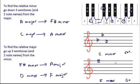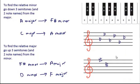But what happens if you're given the key signature and you're asked to figure out the name of the minor key? That's when you have to go in the other direction using the relative minors. So if you're given this key signature with six flats, you first figure out the major key signature and then use that to get the minor. We go down three semitones and two note names — this would be G-flat major with six flats. Starting on G-flat and counting down three semitones and two note names, we end up on E-flat. So we can say that we are in E-flat minor.